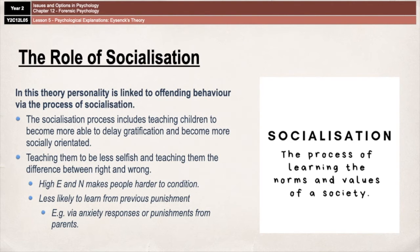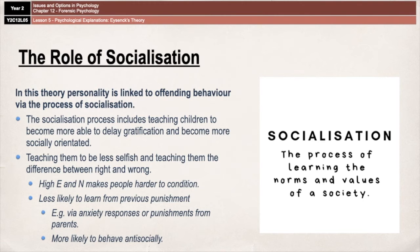Not carrying out the behaviour is then rewarded with negative reinforcement because we're not getting a punishment and we're also removing the anxiety. Being punished for the behaviour also means it is more likely to die out — these are just the basic principles of behaviourism. However, people who have high levels of extroversion and neuroticism, because they are harder to condition, are less likely to learn from the punishment they've received for a behaviour, meaning they are more likely to behave antisocially when the opportunity presents itself. So that is Eysenck's theory of personality linked to offending behaviour.